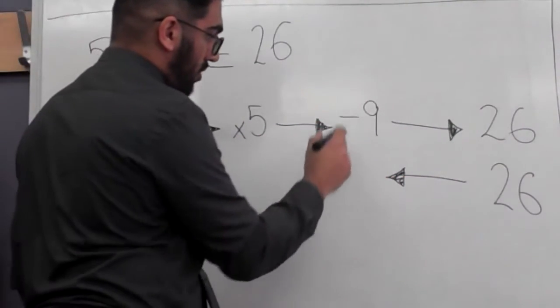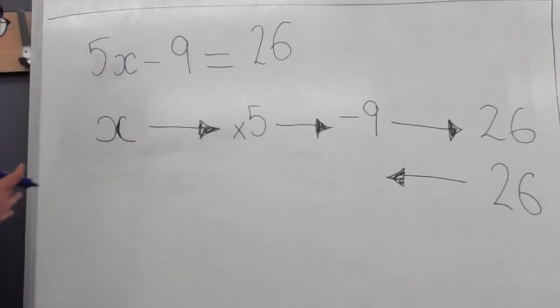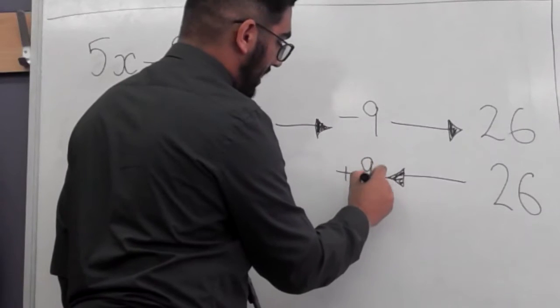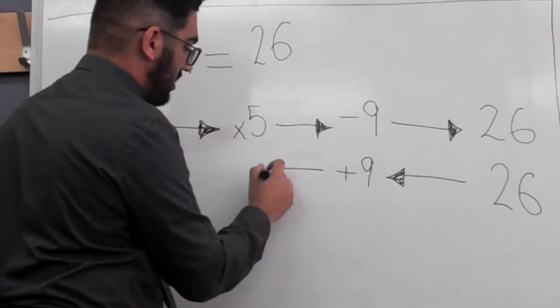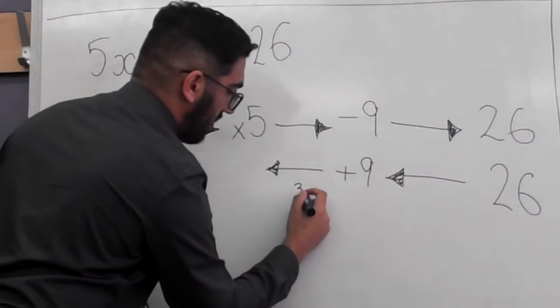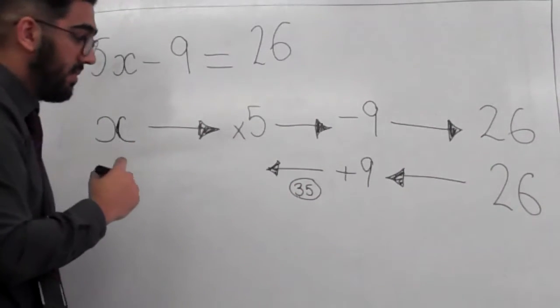Using the flowchart above. So, instead of taking away 9, this time on the way back, we're going to do the exact opposite. So we're going to add 9 there. And what I like to do, is I like to work that out. 26 plus 9 is 35. And I like to put it there. Don't forget about it.